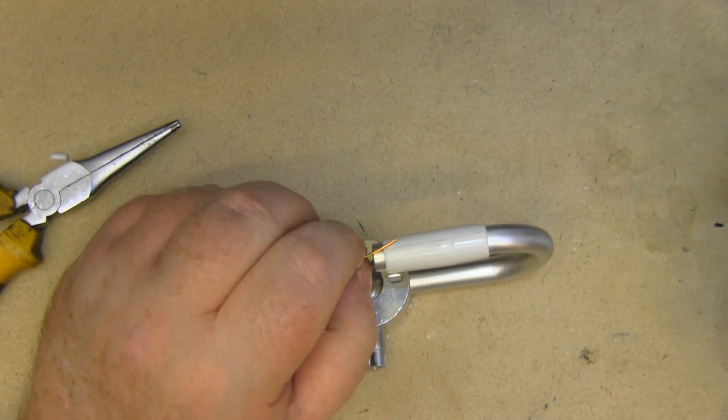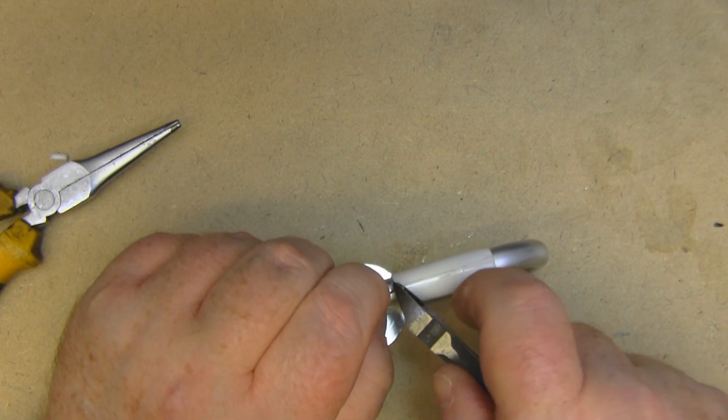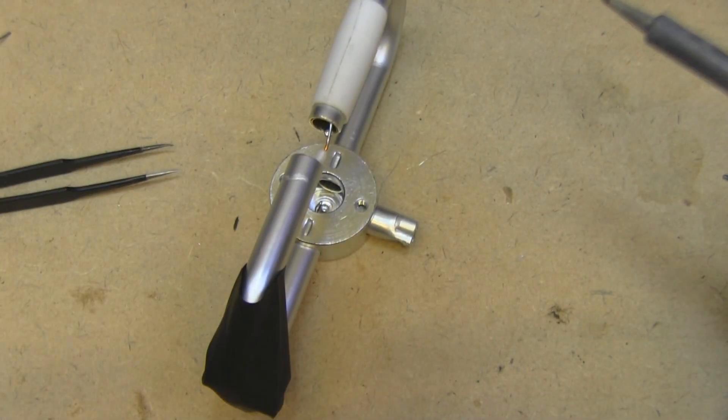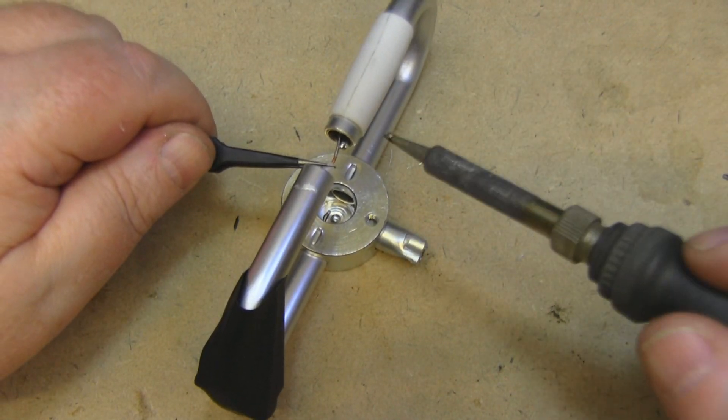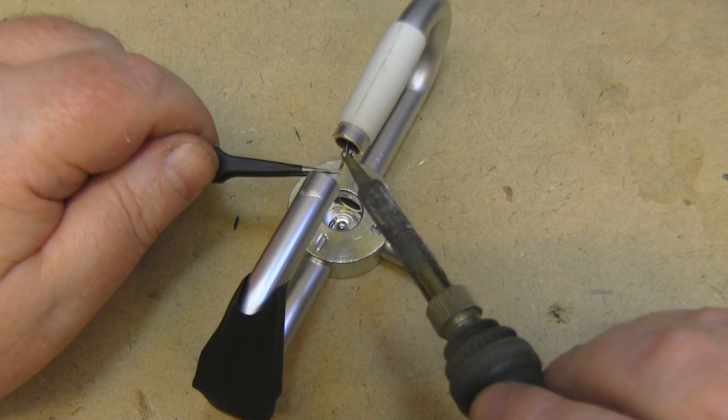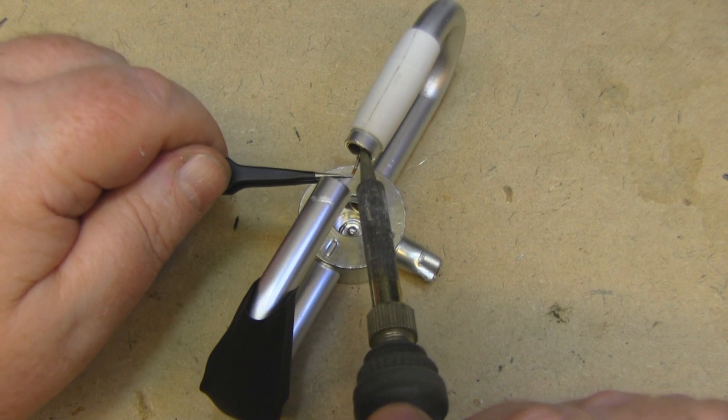There we go. I'll just trim a little bit more off of that. We don't need it quite that long. Here's my tweezers. Hold it into position and get some heat in there. Solder to flow.